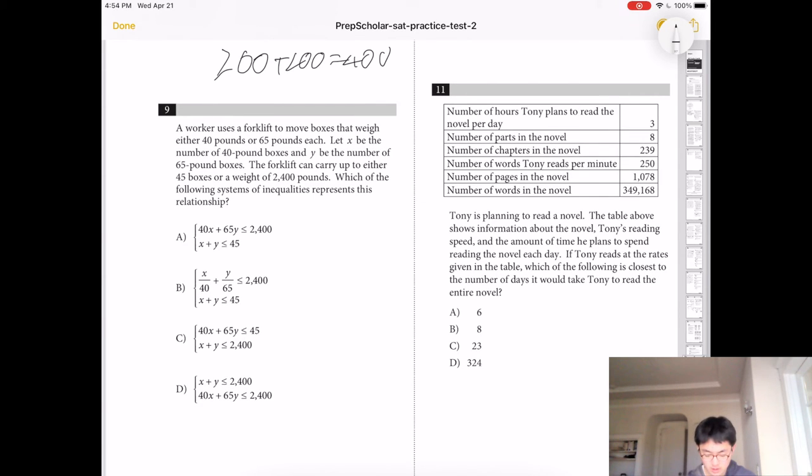Number 9, which of the following systems of inequalities represents the relationship? So we know that x plus y has to be less than 45, because it can carry less than 45 boxes. And 40x plus 65y has to be less than 2400, so the only one is A.